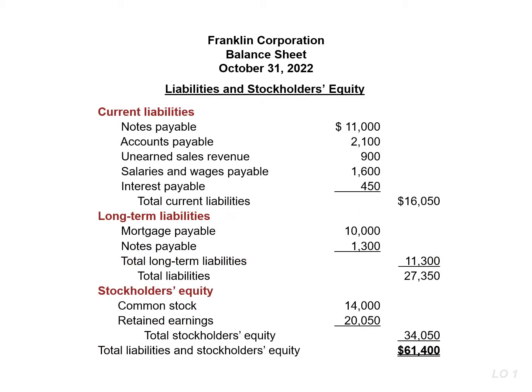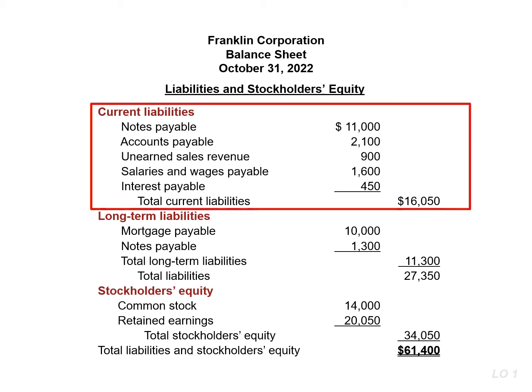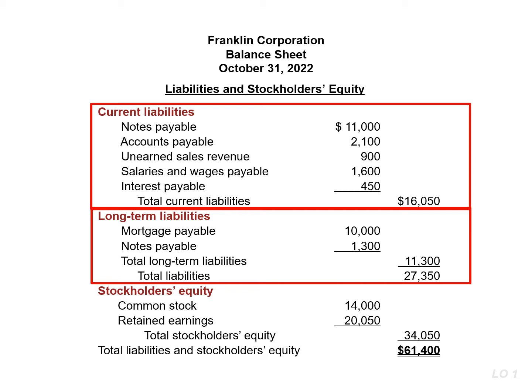In the liabilities and stockholders' equity section of a classified balance sheet, the first grouping is current liabilities. Current liabilities are the debts and obligations that the company expects to pay within the year, whereas long-term liabilities are debts and obligations that extend beyond a year. The last section is stockholders' equity, and we list common stock and then retained earnings.